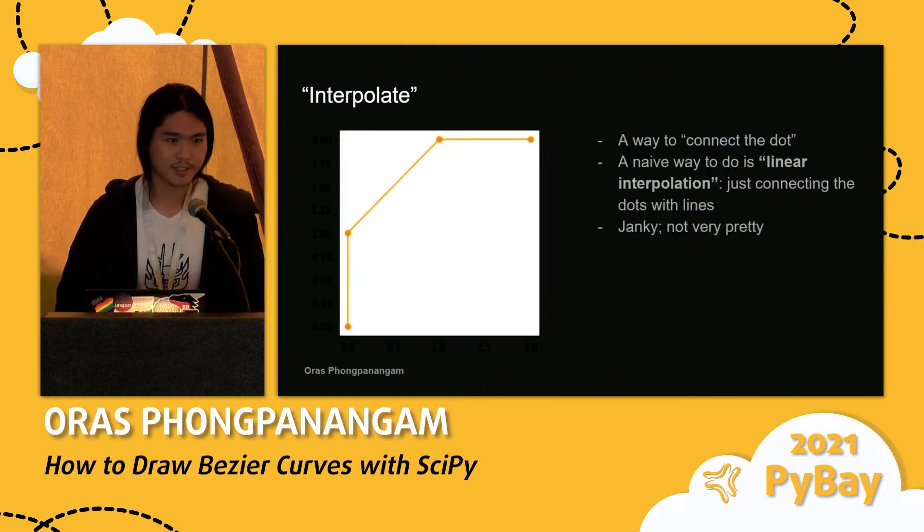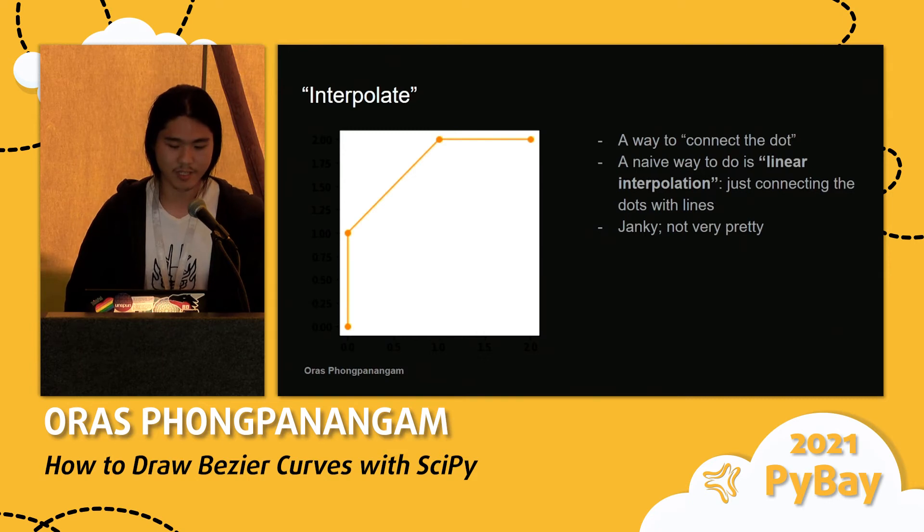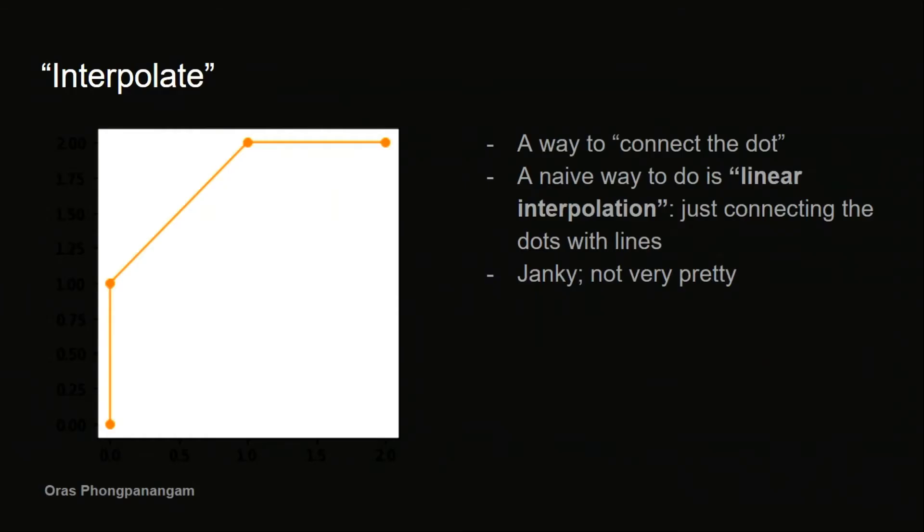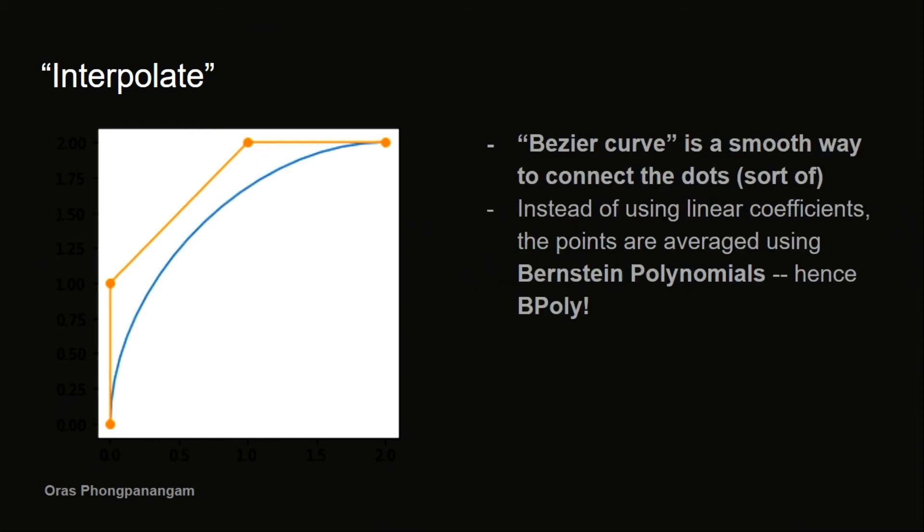So first of all, what does interpolate mean? So in general, interpolate is the way that we connect the dots. It is how we fill in the blank between the data points we have. And a naive way to do that would be a linear interpolation by just connecting the dots with straight lines. It's janky, it's not very pretty.